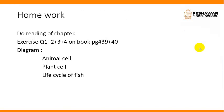Your homework is to do reading of this chapter, exercise questions number one, two, three, and four on pages 39 and 40, and to practice the diagrams of animal cell, plant cell, and the life cycle of fish. Thank you.